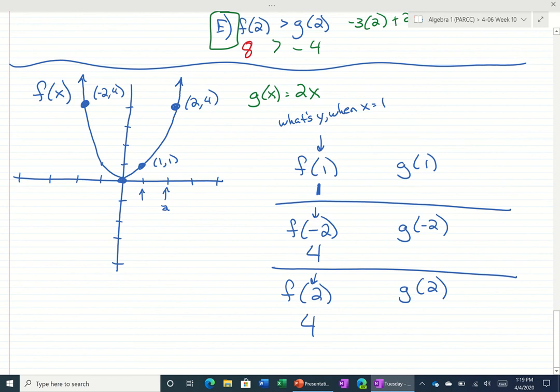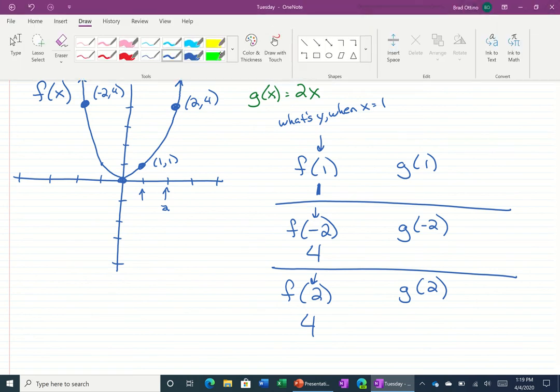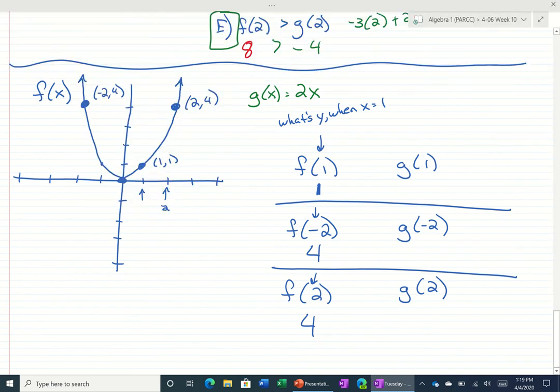Okay, so now let's find g. Now we can either graph it by starting at 0 and going up 2 over 1, or we could just plug into the equation. We saw last time plugging into the equation was pretty fast, so that's what I'm going to do for this one too.